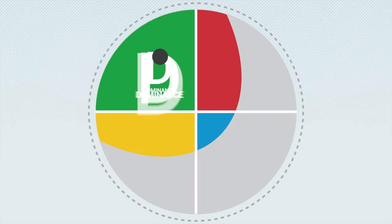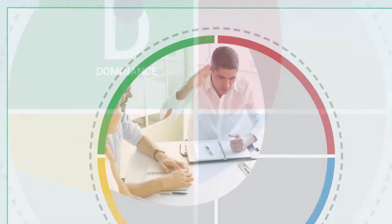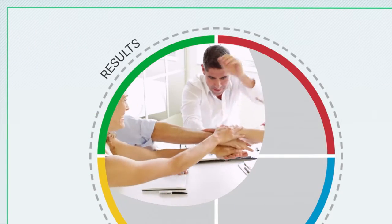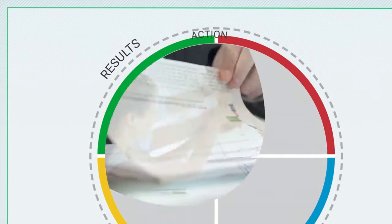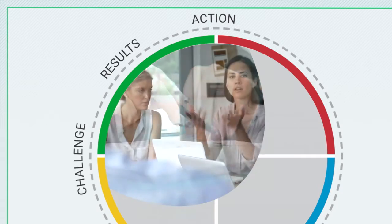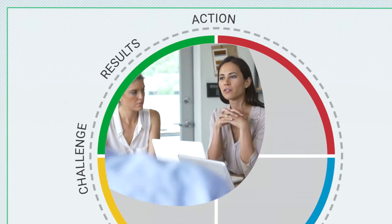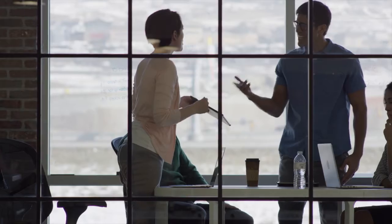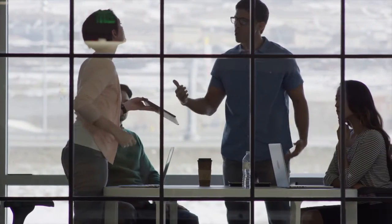For instance, if you have a D, or dominant style, you probably drive toward results, insist on immediate action, and challenge the status quo. Most likely, other people with the D style share your priorities, even though you might butt heads from time to time. Different styles may find this same D approach to be blunt, intimidating, or insensitive.